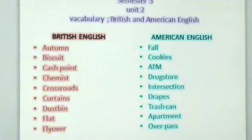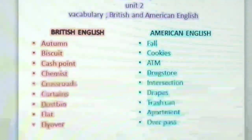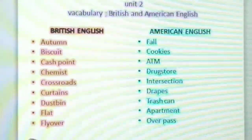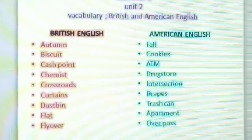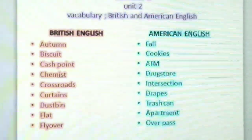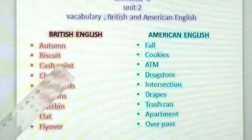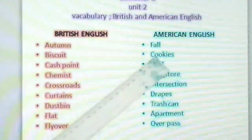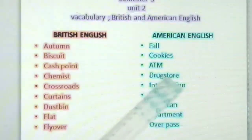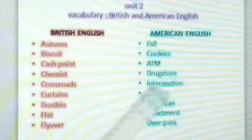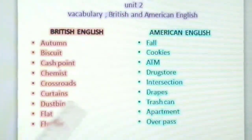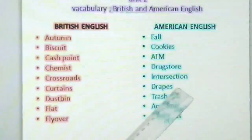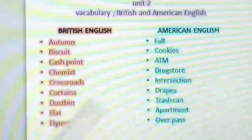What the British call sofa, Americans call couch. I have written on the board some examples of British English and American English. Let's have a glance on it. British English: autumn — American: fall; biscuit — cookies; cash point — ATM; chemist — drugstore; crossroads — intersection.